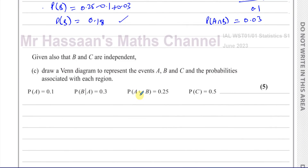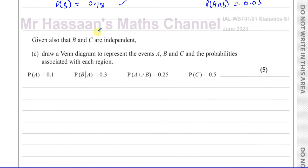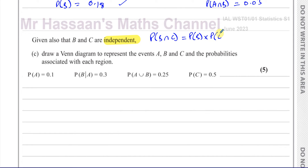For part C, given that B and C are independent. Note there's a difference between independent and mutually exclusive. When two events are independent, P(B∩C) = P(B) × P(C) — the probability of their intersection equals the product of their individual probabilities.